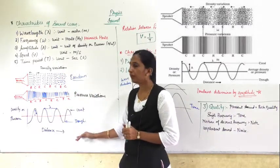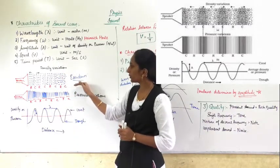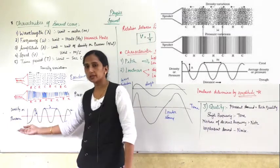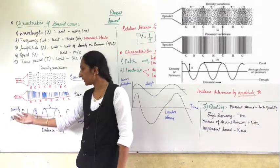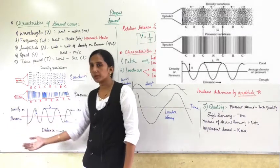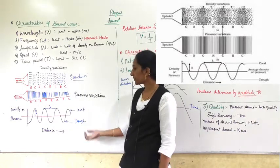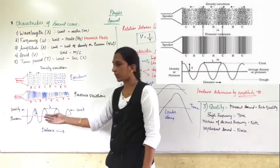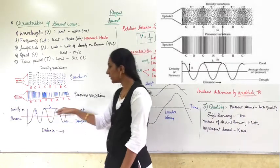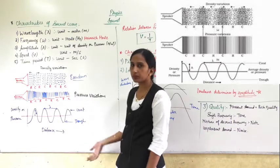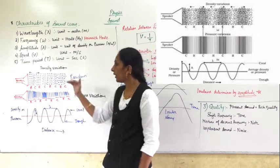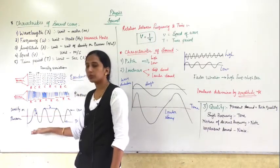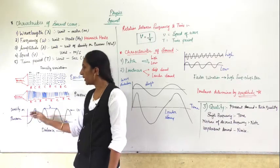I have drawn a graph related to this density and pressure. On the y-axis I have taken density and pressure, and on the x-axis I have taken distance — how the wave is traveling. Now I am going to convert this compression and rarefaction into the form of a wave.